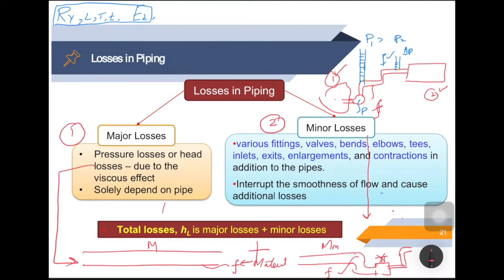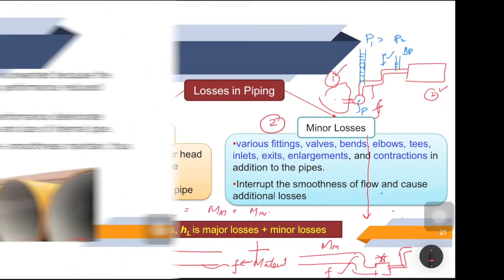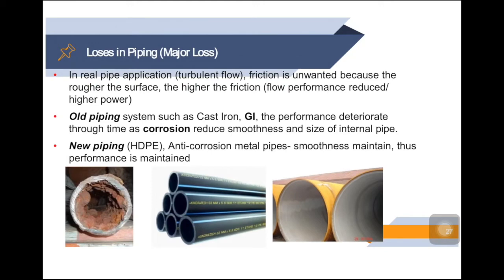The total loss of the piping system is denoted by HL, which is a function of major plus minor losses. The losses in piping depend on the type of material of which the pipe is made. For old piping systems such as cast iron and GI, you can see there is a lot of corrosion, which increases the internal roughness of the pipe, increasing friction and pressure loss. New types of piping systems made of polymers — HDPE, high-density ethylene polymers, and anti-corrosion pipes — are now being used to reduce the power required to transport fluid.